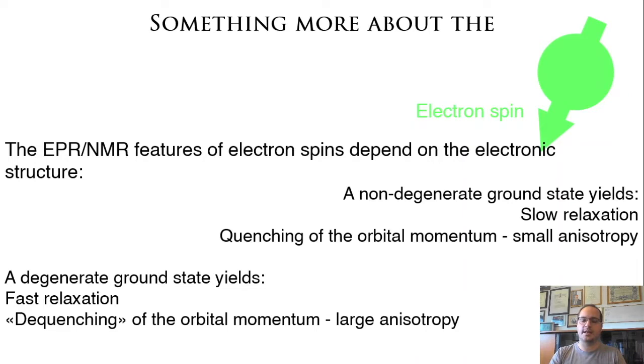A non-degenerate ground state yields slow relaxation, efficient quenching of the orbital momentum, and therefore small magnetic anisotropy. On the contrary, a degenerate ground state yields fast relaxation, inefficient quenching of the orbital momentum, and therefore large magnetic anisotropy.